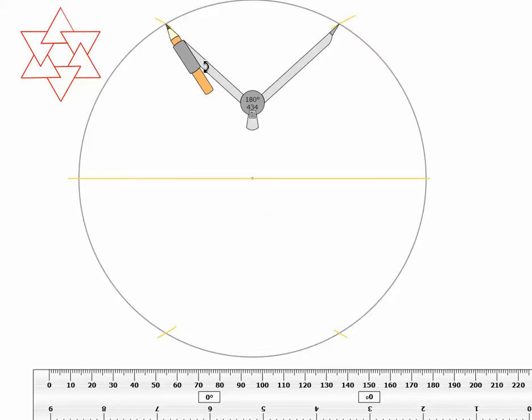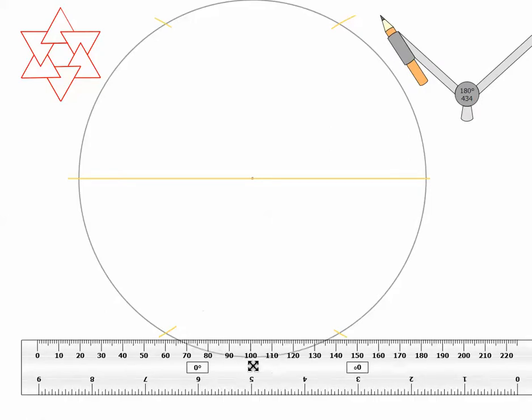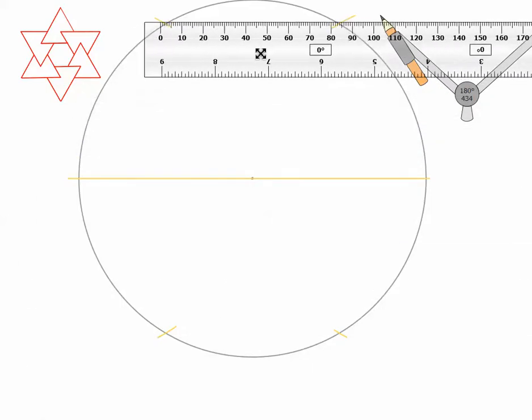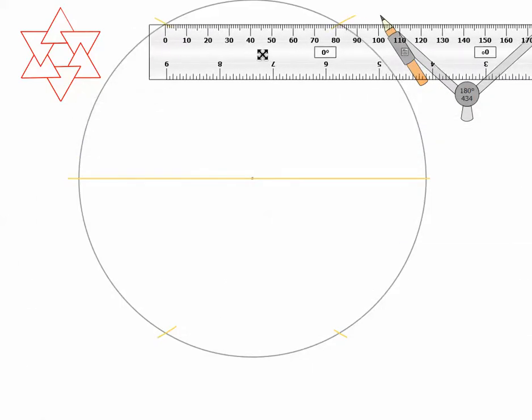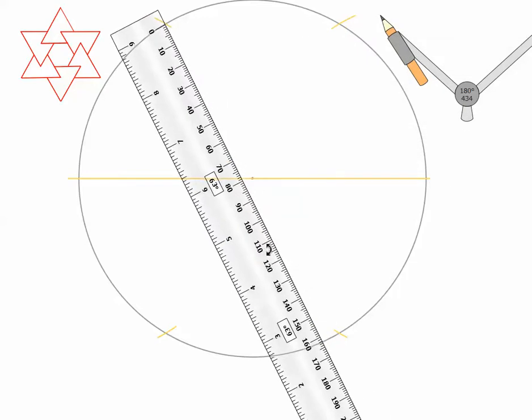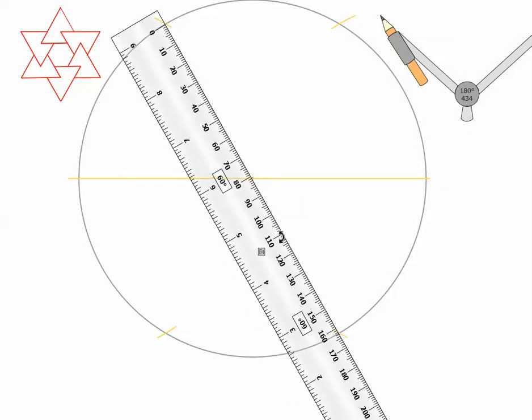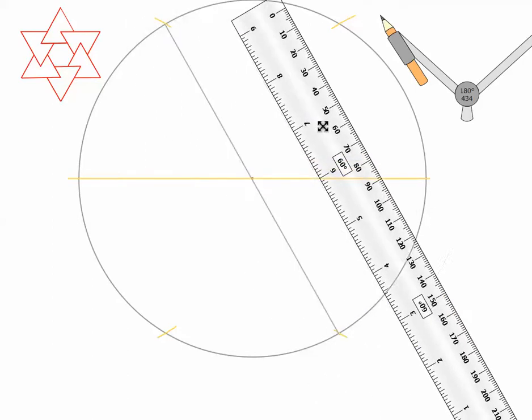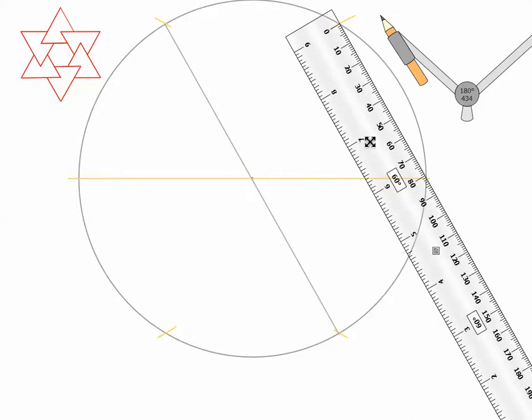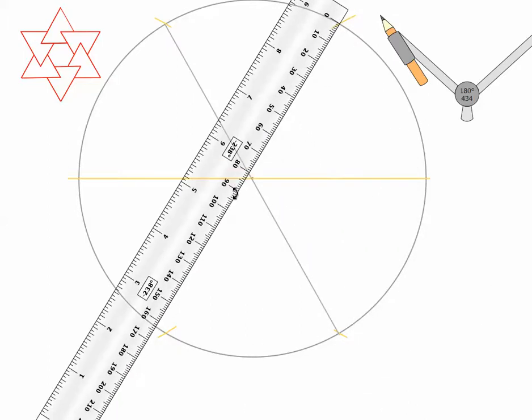So now I'm going to draw two more diameters. And I'm going to draw them by connecting the intersection of the arc across the center, like this. So there's one.